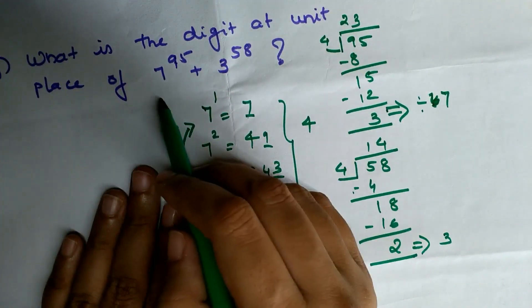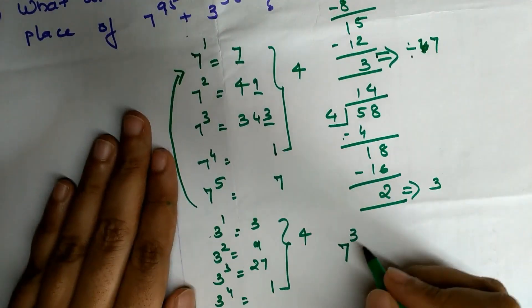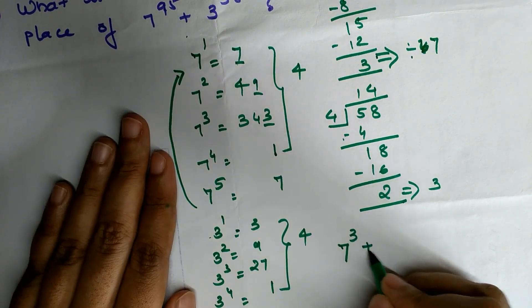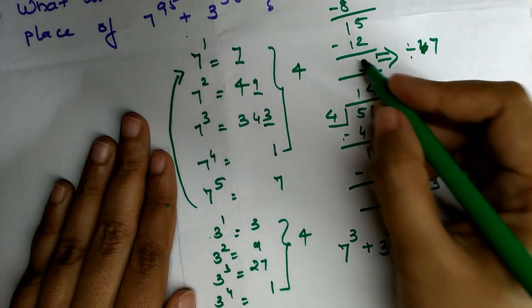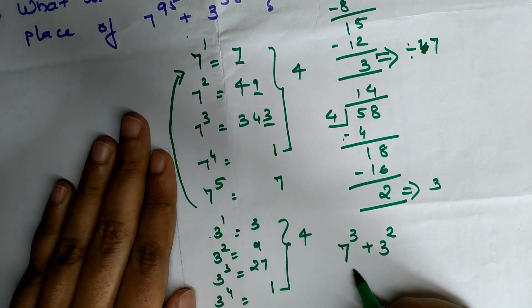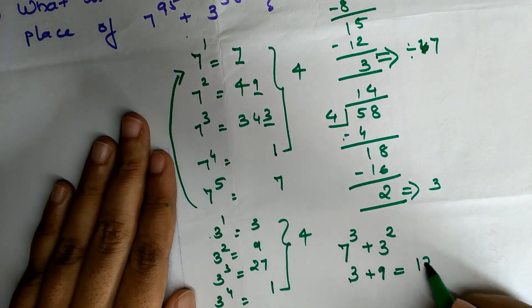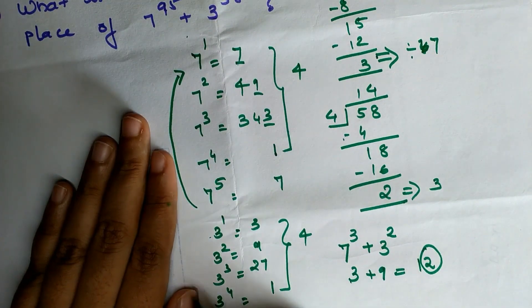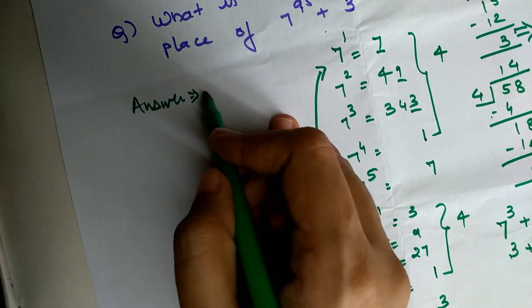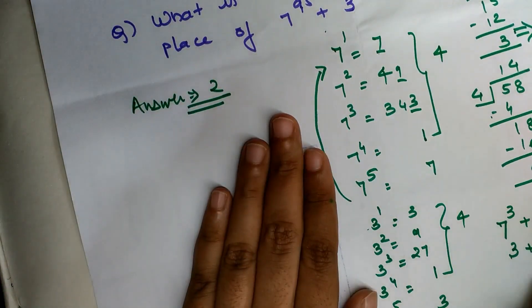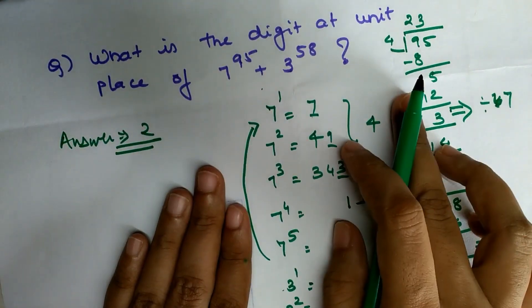To find the units place of 7^95 + 3^58, we find the units place of 7^3, which is 3, plus the units place of 3^2, which is 9. Three plus nine equals 12, so the final units digit of the answer is 2.